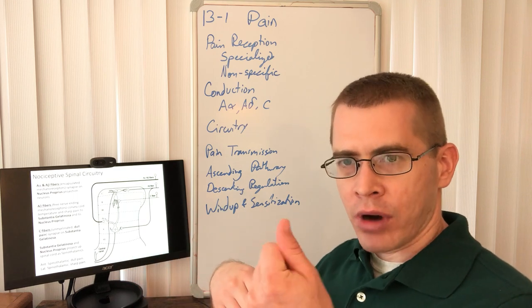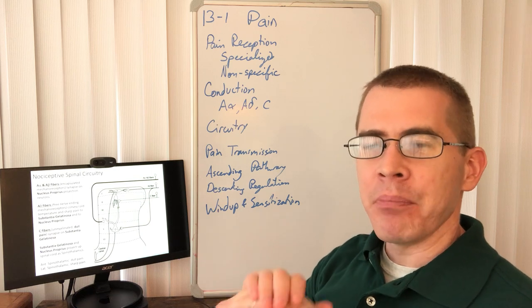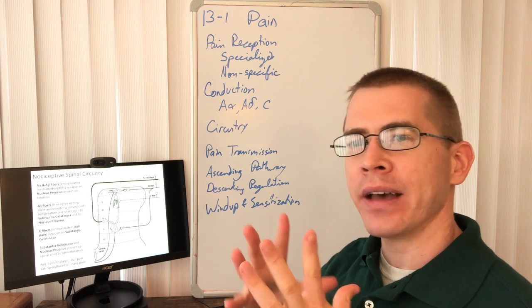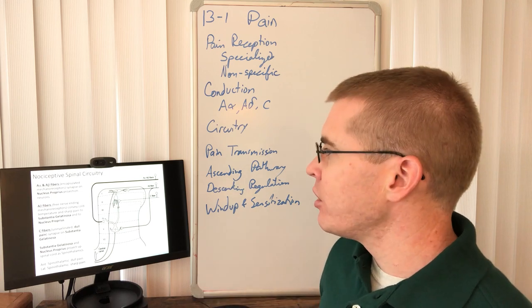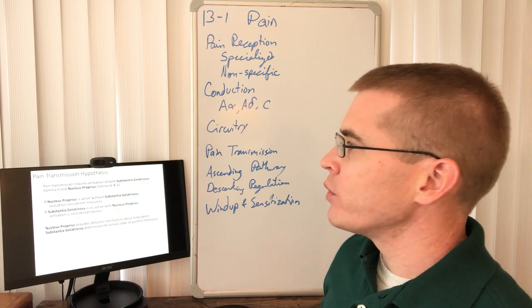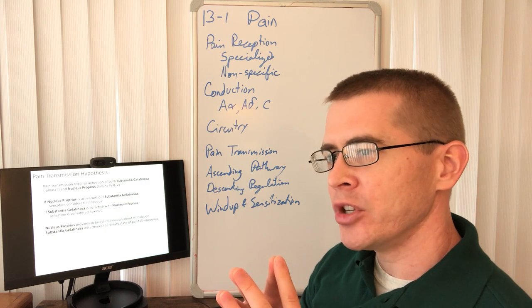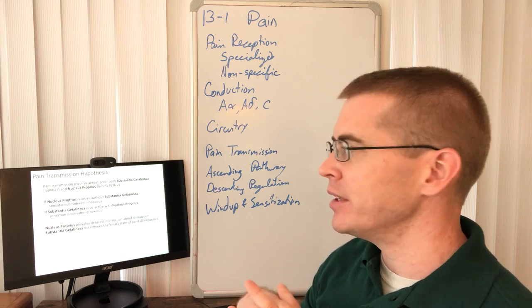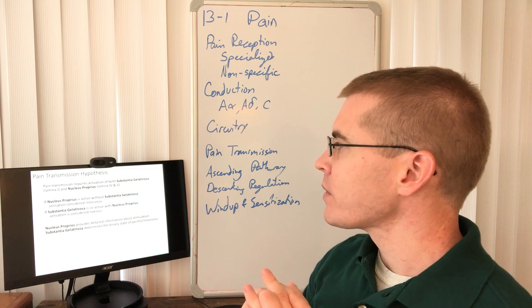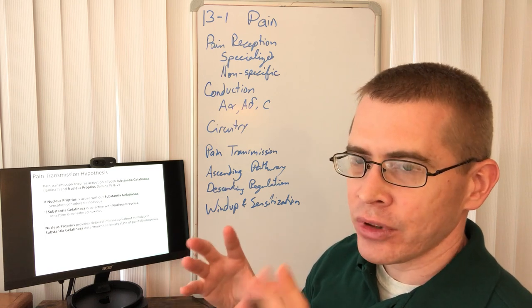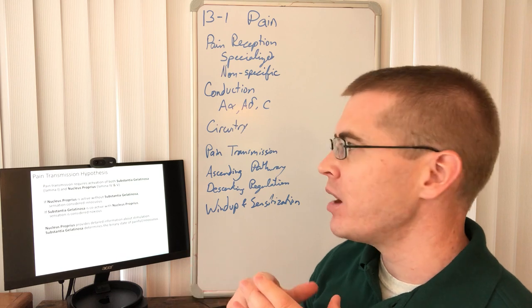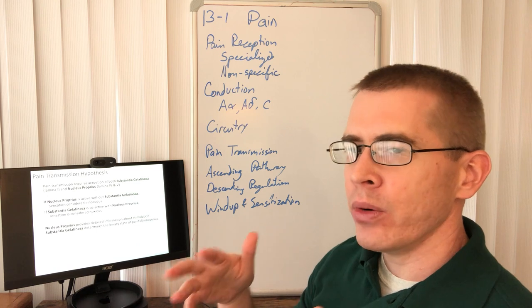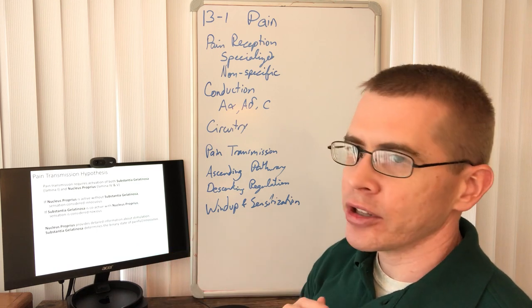And so pain can be modulated in a number of different ways. You'll notice that if you rub a pained area, that it masks the pain. So normal somatosensory reception can mask nociception. And so those are the reasons why we believe that pain transmission happens on a basis of collaterals and connectivity in the spinal cord. So pain isn't fully understood, and the prevailing hypothesis is that pain transmission requires activation of both the substantia gelatinosa and the nucleus propria.